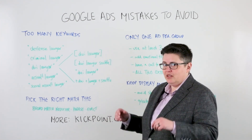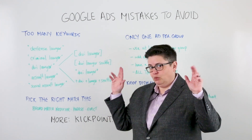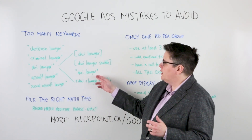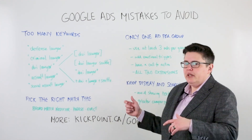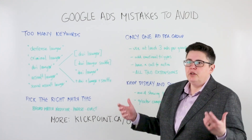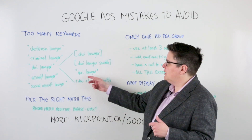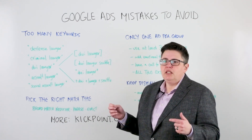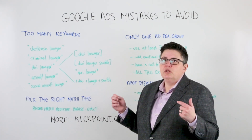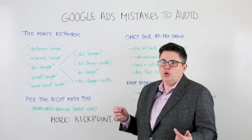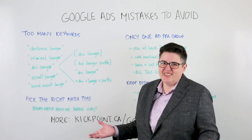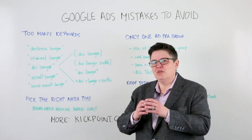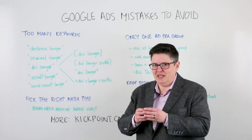The next type is phrase match, shown in quotes. Here the example is "DUI lawyer" — you can have anything before it or after it, but you can't have something inserted in the middle of it. So it couldn't be 'DUI who is really great at being a lawyer,' for example. You can't just shove stuff in the middle of a phrase match.